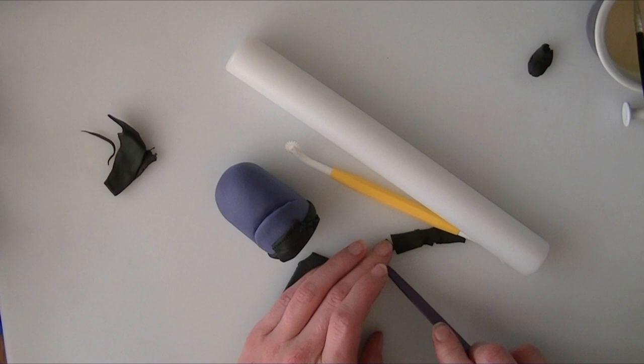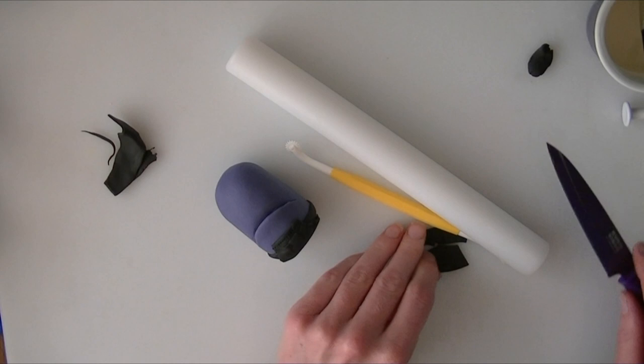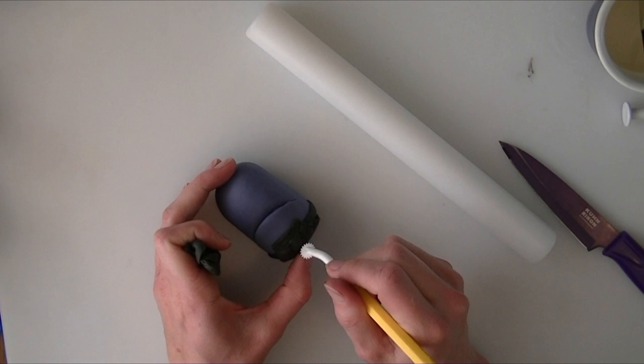If we have still got some bits rolled out, we'll give him a little pocket from it. I've just cut out a little rectangle for this one, it's just going to go on the front. I'll re-roll this for his straps and we will put some stitching in his pocket as well, just around the edge.